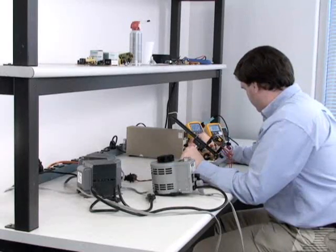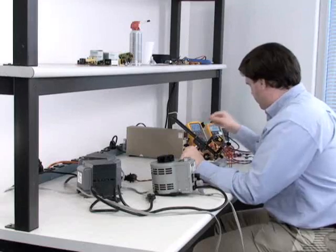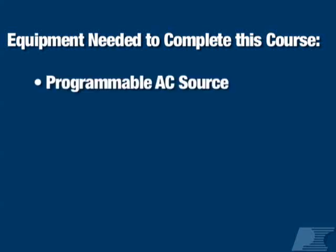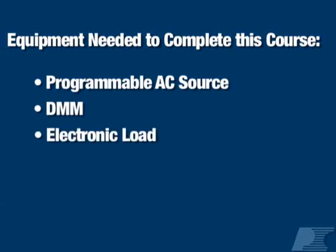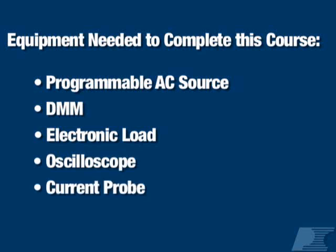This could be happening immediately upon startup or when the output load is applied. During this course, you'll need the following equipment: a programmable AC source or a variac, a DMM, an electronic load, an oscilloscope with one high voltage probe, and a current probe.